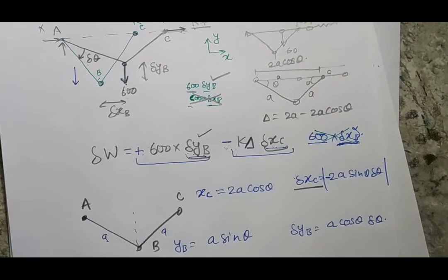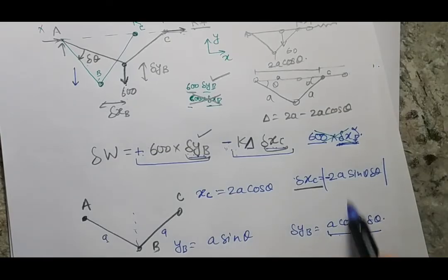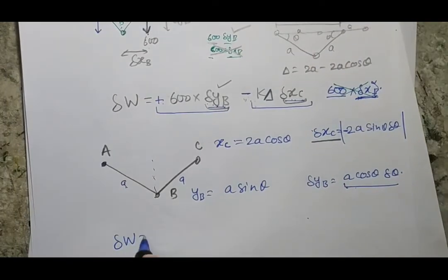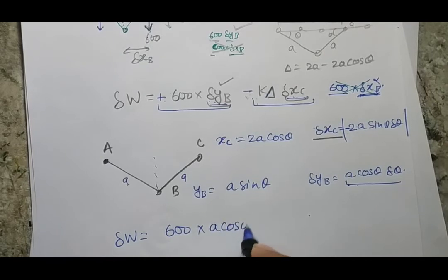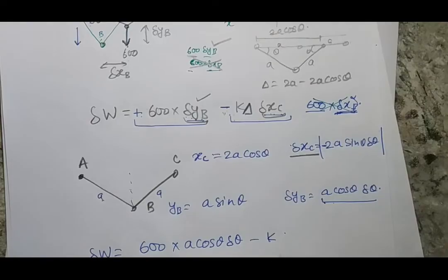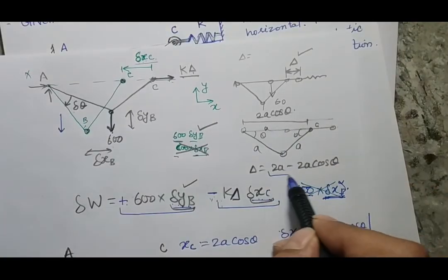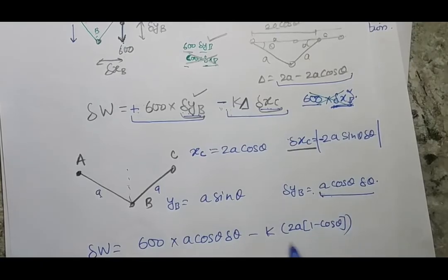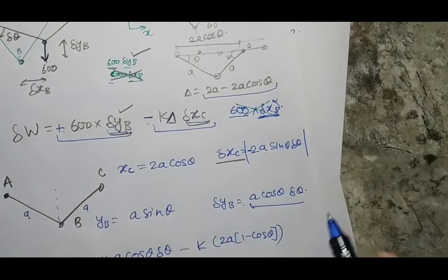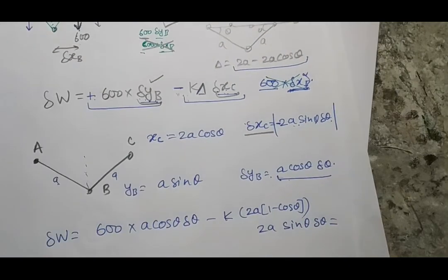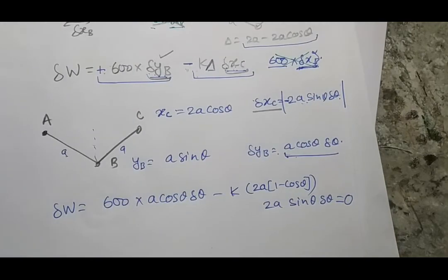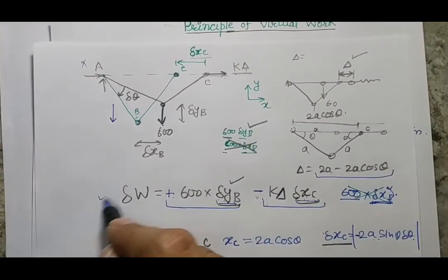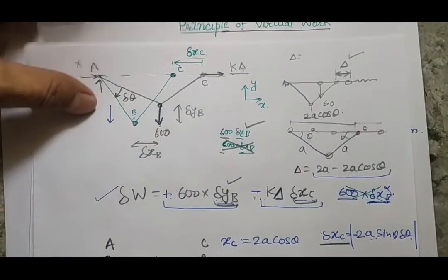Important: once the sign has already been assigned in the work equation based on force and displacement directions, use only the absolute (modular) values when substituting del X_C and del Y_B — do not reintroduce signs from the differentiation. Substituting: total virtual work = 600 × A cos theta · del theta − K · 2A(1 − cos theta) × 2A sin theta · del theta = 0. This is the principle of virtual work: set total virtual work equal to zero.